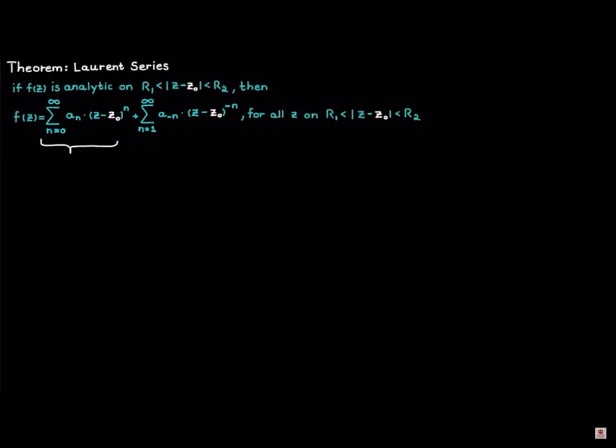The first one, which includes all the positive powers of z minus z0, is called the analytic part since this part will always be analytic. While the second one contains all the negative powers of z minus z0 and is called the principal part.